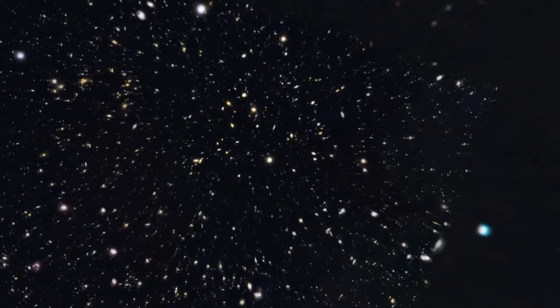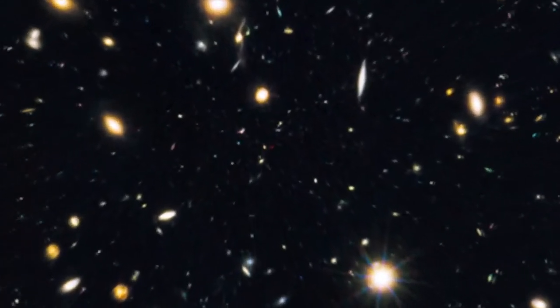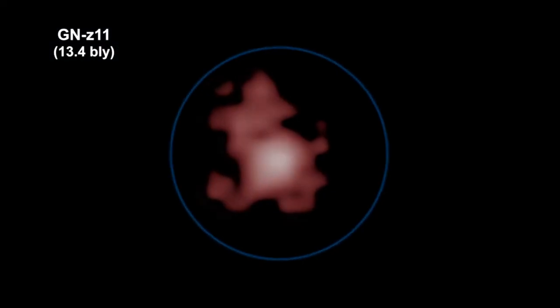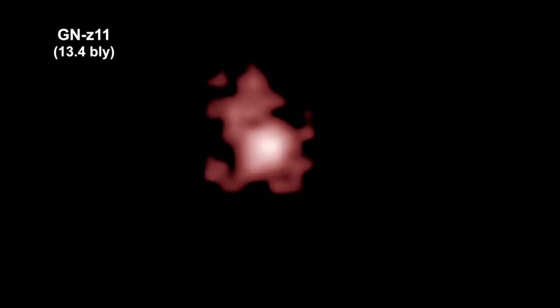Here we are zooming into GNZ 11, the most distant object ever found. The galaxy's redshift, combined with Hubble's law, gives us the distance the light traveled, 13.4 billion light years. And we know the speed of light, so the time traveled was 13.4 billion years. We normally say that the galaxy is therefore 13.4 billion light years away.